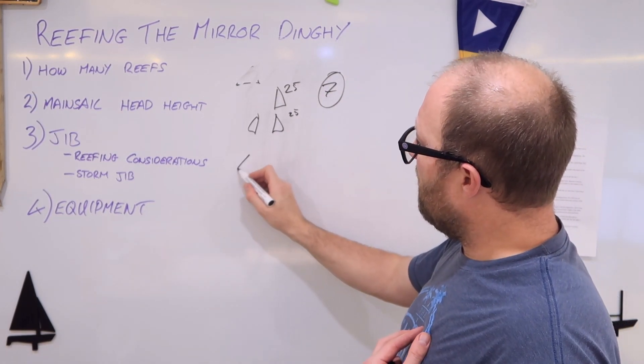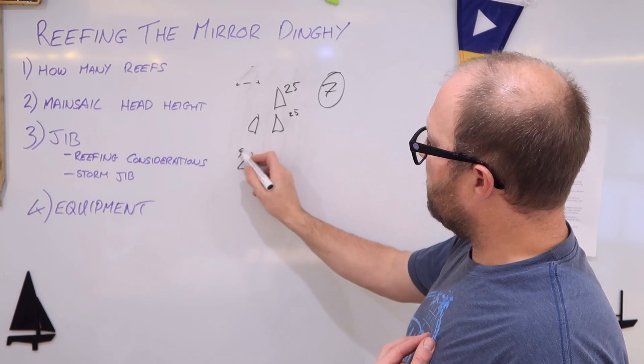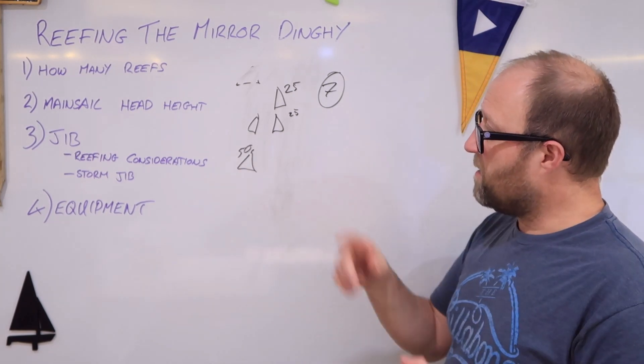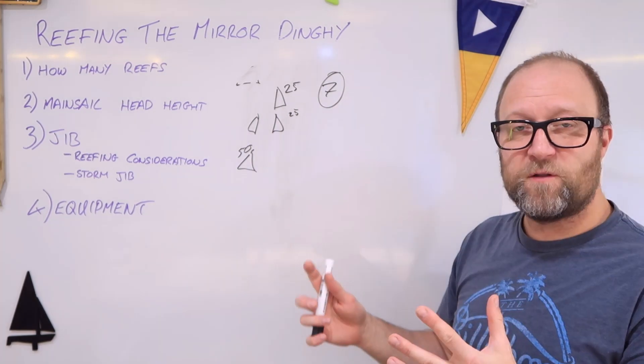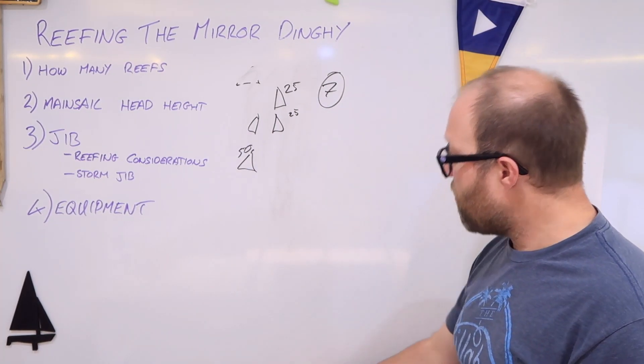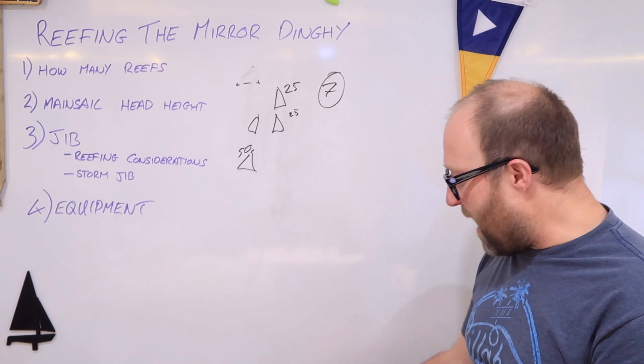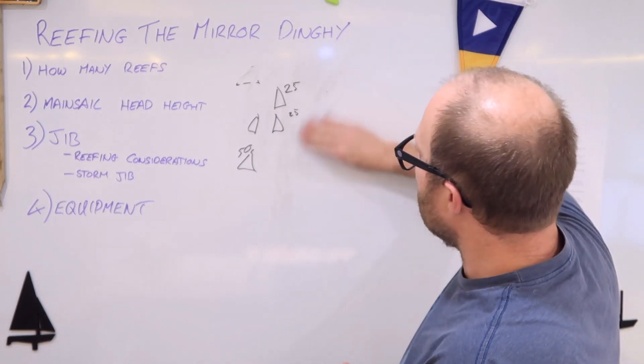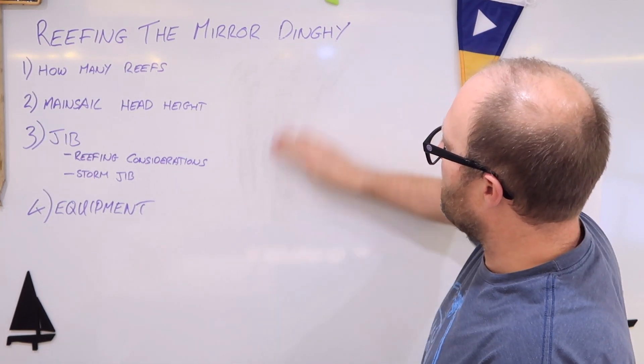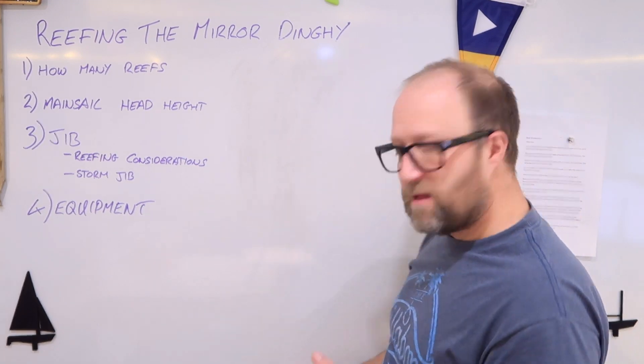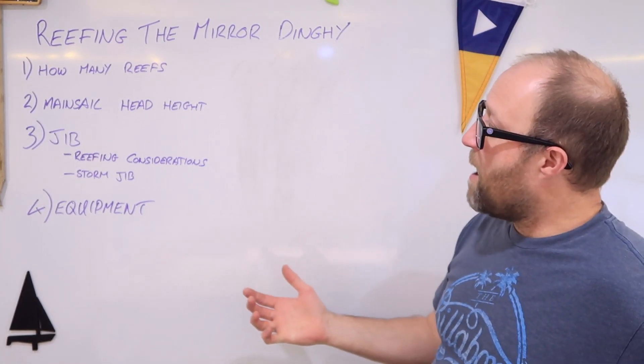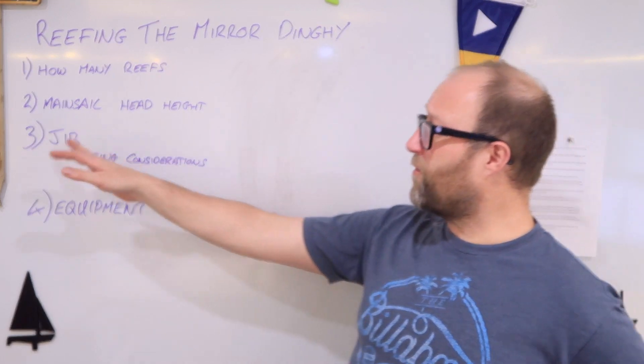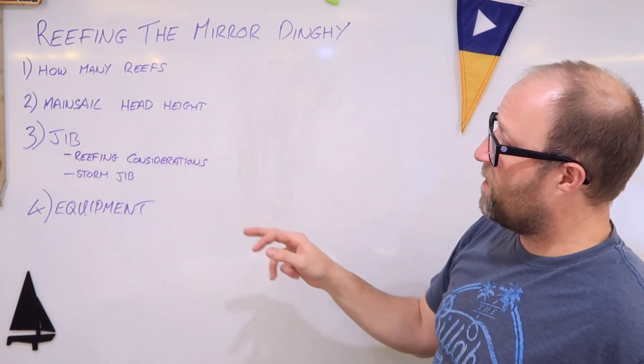If we then add a reef in the jib at 50%, then you can almost double, I think it works out at 10 different sort of sail plans. So from that, I think really we're not going to need any more than two reefs in the main sail and possibly one in the jib. In fact, we'll come on to number three. Now we'll come back to number two, the jib reefing considerations.